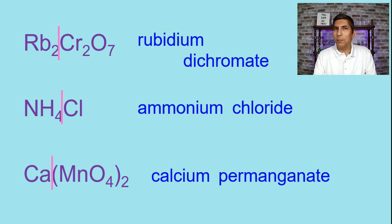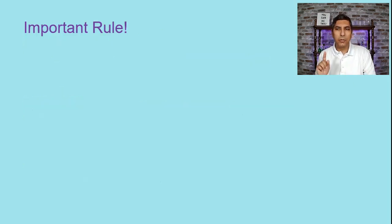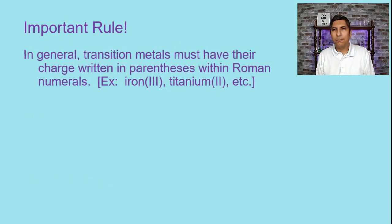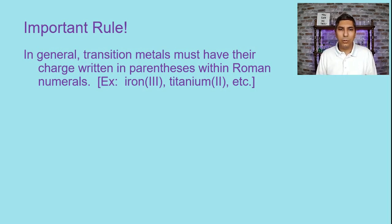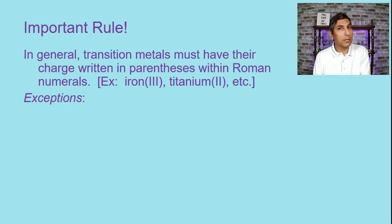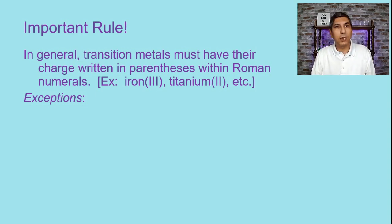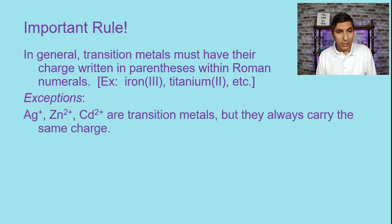There is one other step that sometimes we have to do — an important rule. Some metals, mostly transition metals, need a charge written in Roman numerals after the name of the metal, like iron(III) or titanium(II). Most of the time you need transition metals listed with their charge in parentheses as a Roman numeral. There are some exceptions though: silver, zinc, and cadmium.